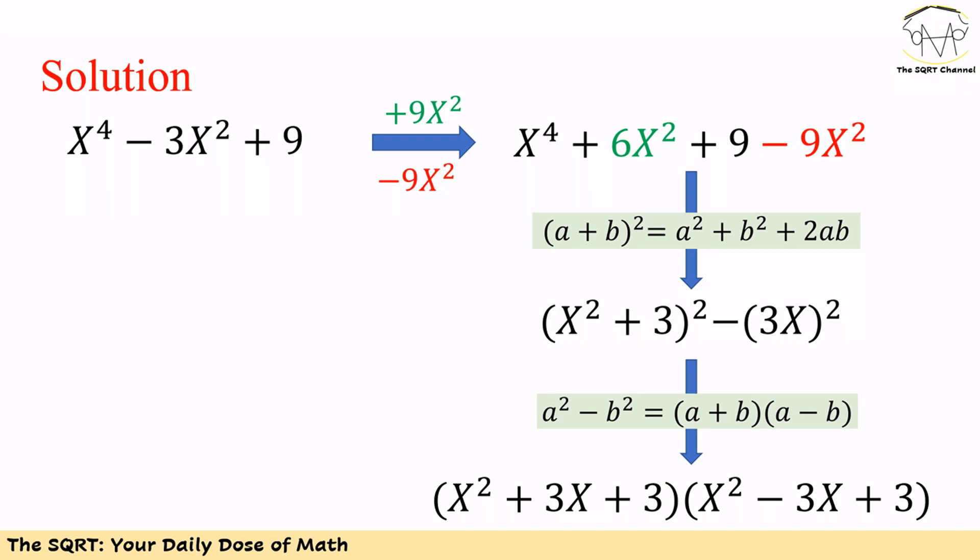Now remember that a² minus b² can be written as (a + b)(a − b). Using this identity, the expression can be simplified as (x² + 3x + 3)(x² − 3x + 3).